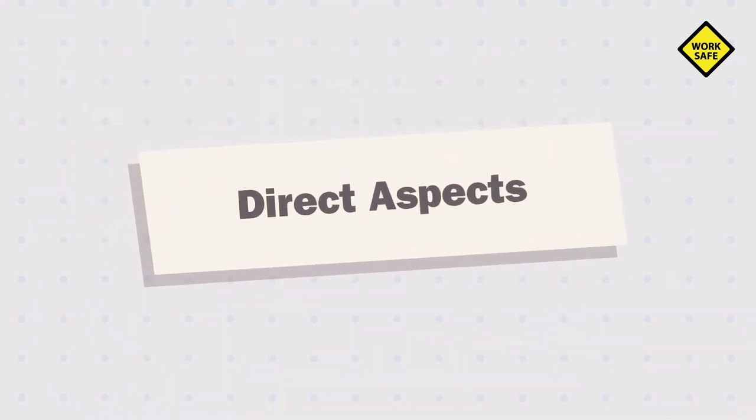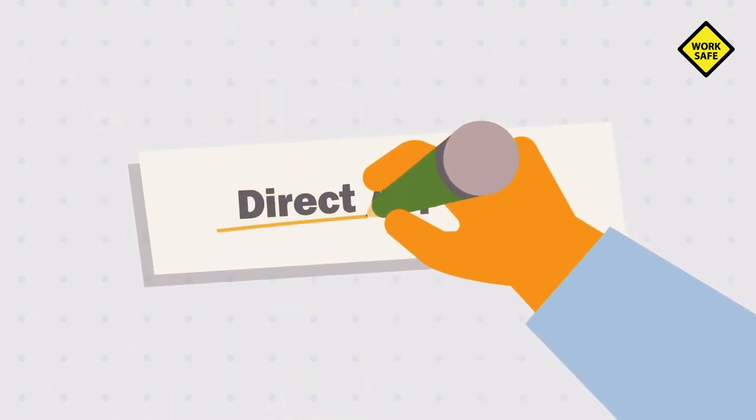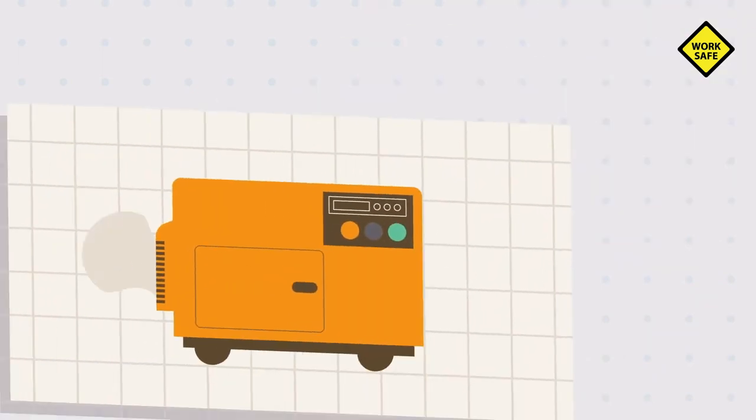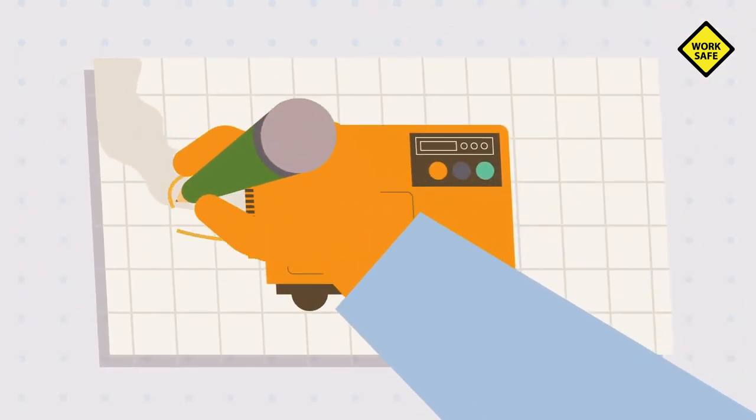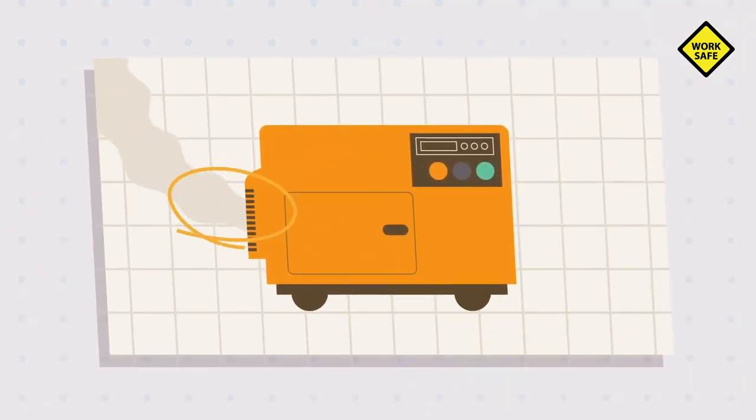Not all environmental aspects will fall under your control. Those that do are known as direct aspects. For example, your site has backup diesel generators which emit carbon dioxide causing pollution to land and air.